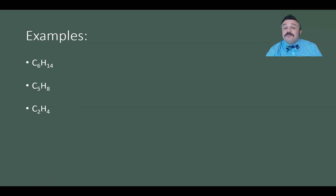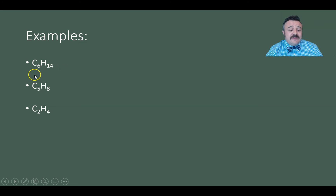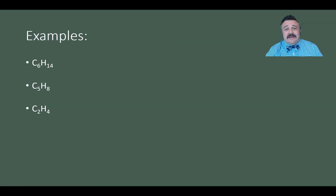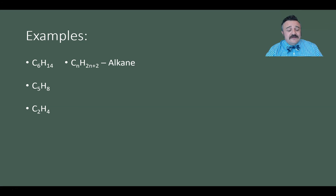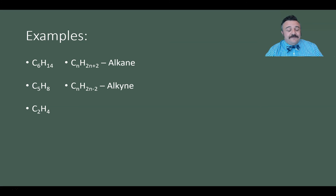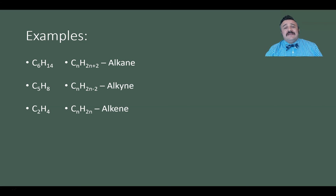Now let's identify examples just from the general formula, assuming only one functional group. C₆H₁₄: two times six is 12, plus two gives 14 — that matches CₙH₂ₙ₊₂, so it's an alkane. C₅H₈: two times five is 10, but H is 8, which is 2n − 2, so it's an alkyne. Our final one has n = 2, so 2n = 4, giving C₂H₄ — that matches CₙH₂ₙ, which is an alkene.